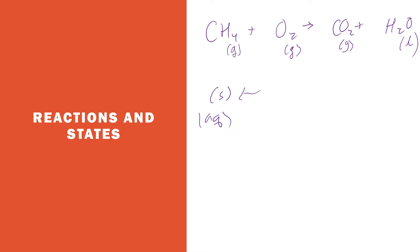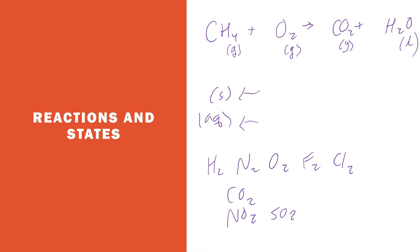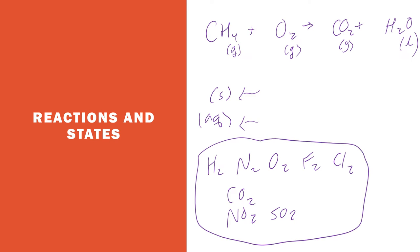Solids are for compounds that are not soluble in water, whereas aqueous is for things that are soluble in water. Some general things you should know: hydrogen is a gas, nitrogen is a gas, oxygen is a gas, fluorine is a gas, chlorine is a gas, and CO2 is a gas. NO2 and SO2 are also gases, though they don't show up as often. You should know that bromine is a liquid at room temperature, and water is a liquid at room temperature. Iodine (I2), the other halogen, is a solid at room temperature. Those are some gases, liquids, and solids and their states of matter that I recommend you remember.